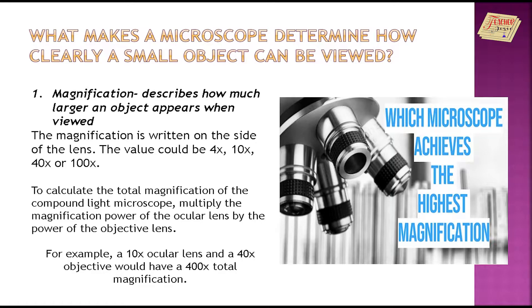To calculate the total magnification of the compound light microscope, multiply the magnification power of the ocular lens by the power of the objective lens. For example, a 10 times ocular and a 40 times objective would have a 400 times total magnification.